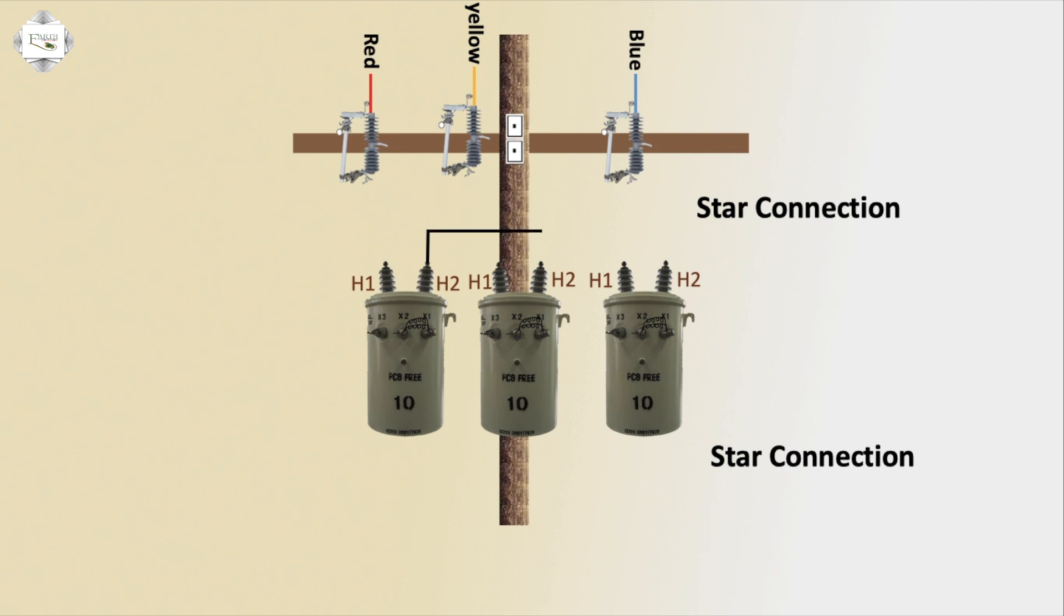H2 or H2 short, H2 H2 short transformer. The first transformer red input is H1 connection, second transformer yellow X1 input, or blue is H1 input. This connection is complete high voltage side or low voltage side neutral common.